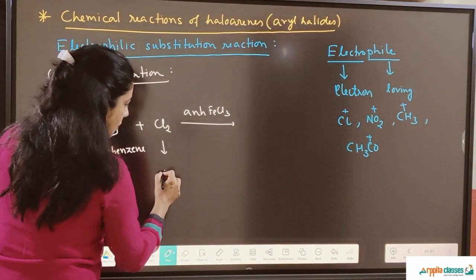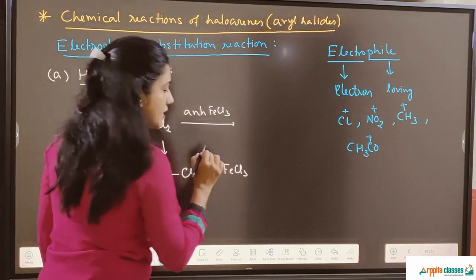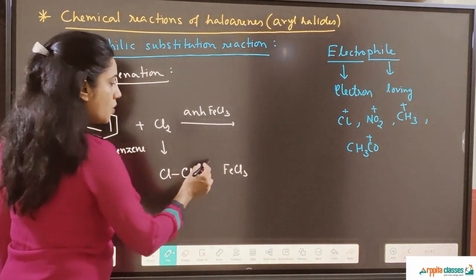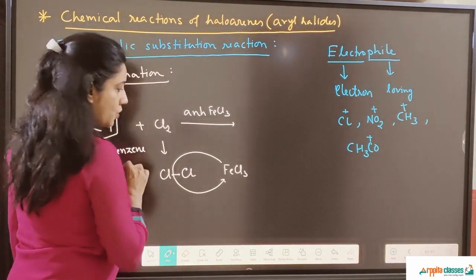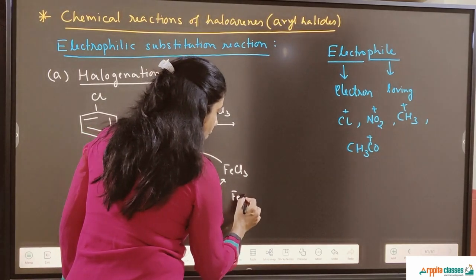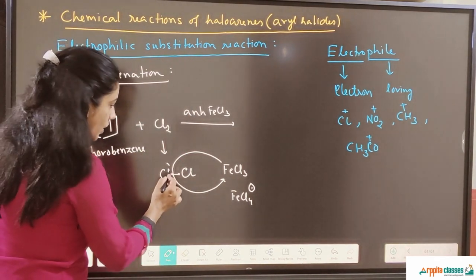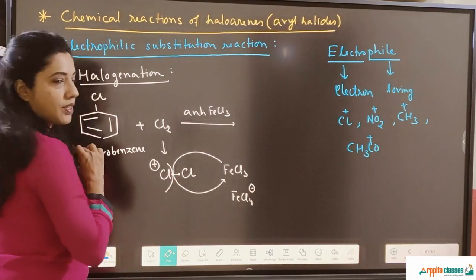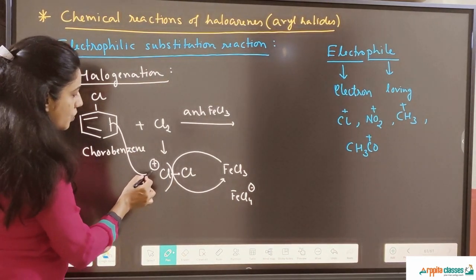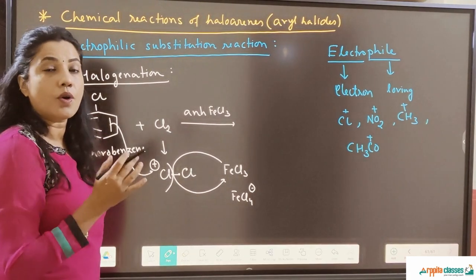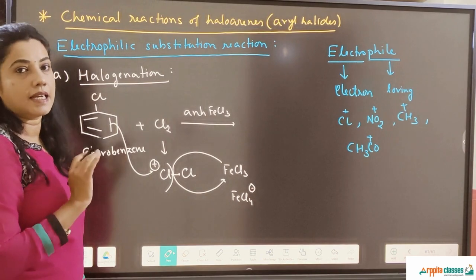Suppose we have the Cl–Cl bond — a single covalent bond. Since anhydrous FeCl₃ is a Lewis acid and electron deficient, it takes one chlorine along with its two electrons and forms FeCl₄⁻ to stabilize itself. If this chlorine goes with those two electrons, the other chlorine is left alone with a positive charge — this is the Cl⁺ electrophile, which gets attracted by the pi electrons of the benzene ring, the electron-rich area, and then chlorine gets attached to the benzene ring.